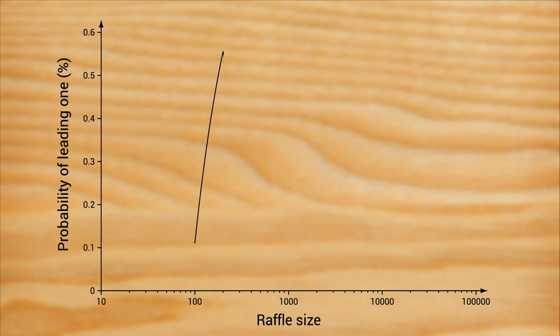And as we move up to one thousand, the probability gently falls back to eleven percent again. Moving up to two thousand gives us fifty-six percent again, and at ten thousand we're back to eleven percent, and so on.